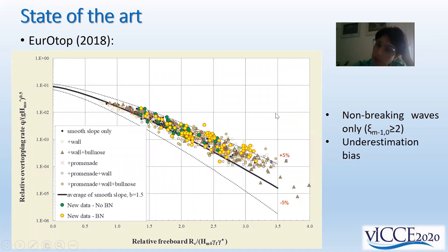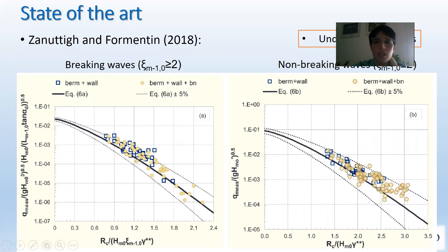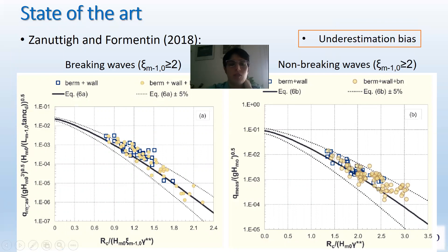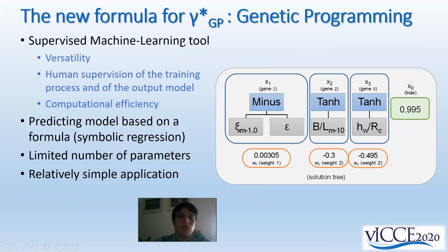During the analysis, we observed that the EurOtop formula with the original gamma star coefficient provides an underestimation bias of all the van der Sleer data and our new data — shown here in green and yellow circles, with and without parapet. This chart shows the overtopping discharge against the relative freeboard. Our new formula for breaking and non-breaking waves proposed the same underestimation bias, and in both cases we have an underestimation bias of all the data.